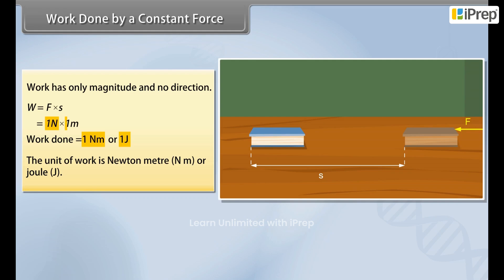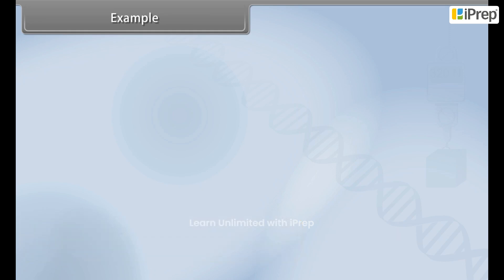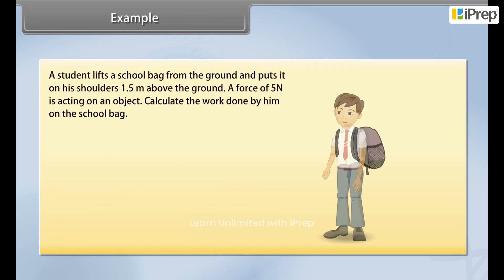Example: Let's now find the work done when force applied and displacement is given. A student lifts a school bag from the ground and puts it on his shoulders 1.5 meters above the ground. A force of 5 Newtons is acting on an object. Calculate the work done by him on the school bag. We can see that here force applied is 5 Newtons and displacement s is 1.5 meters.